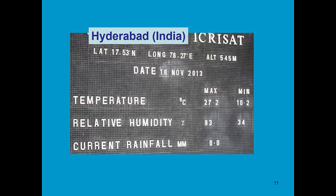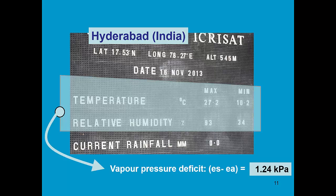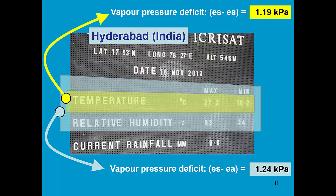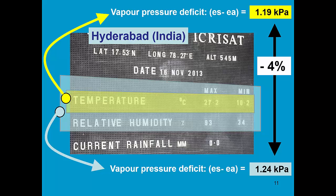Here we are in Hyderabad, India, at the ICRISAT station, where for each day maximum and minimum temperature and relative humidity are measured. Using temperature and relative humidity data, the calculated vapor pressure deficit is 1.24 kPa. If I use only the temperature — assuming no knowledge of the actual vapor pressure from relative humidity — and use the minimum temperature as an estimate of the dew point temperature, the result is 1.19 kPa. There is only a difference of 4% between the measured value and the estimated value.